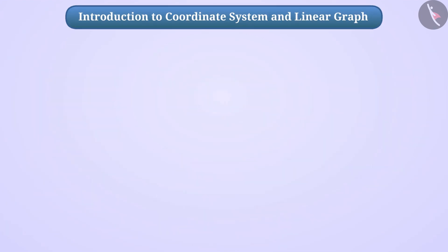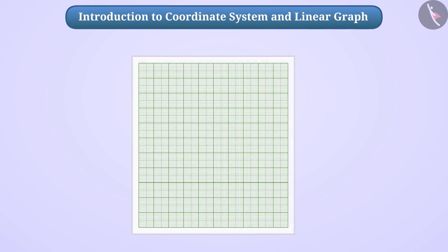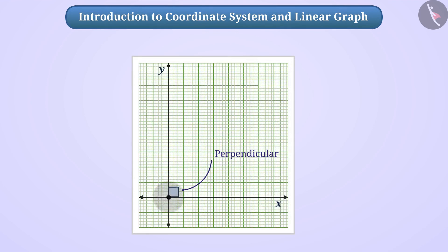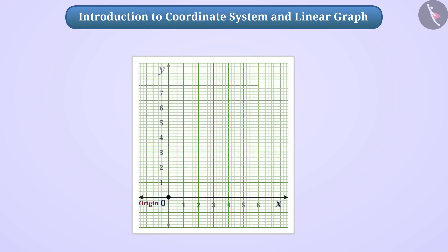For example, there is a graph paper showing the x-axis and the y-axis. They are perpendicular to each other. Their point of intersection is called the origin. Assuming the origin point as 0, we represent numbers on the x-axis and the y-axis. If we take a point A on the graph, we can say that its position is represented by the number 2 of the x-axis and number 3 of the y-axis.